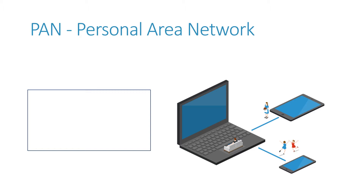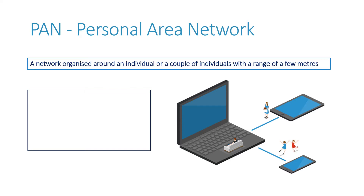A PAN stands for a Personal Area Network, and it's when just you, by yourself, network two or three of your devices. You link up, say, your phone with your laptop or your tablet, and that is called a PAN. It's a network organized around an individual or a couple of individuals with a range of a few meters.